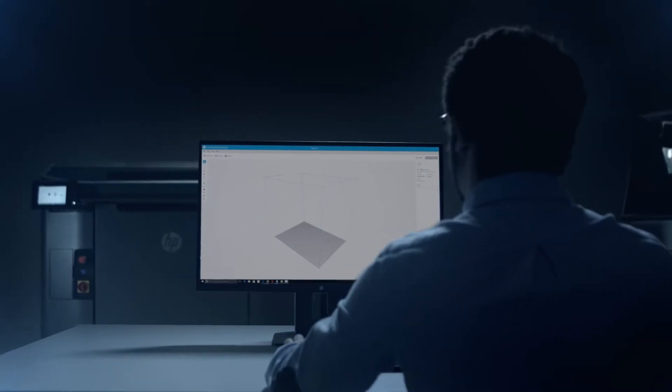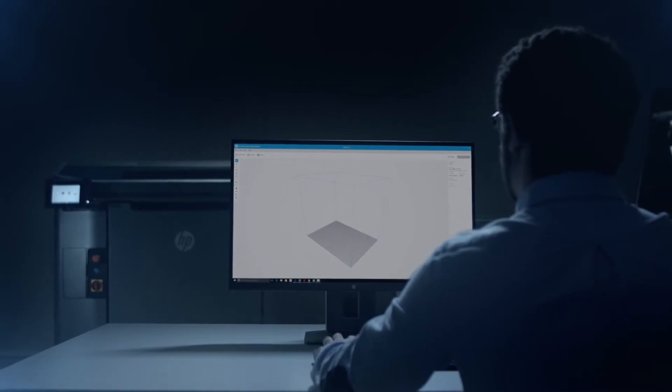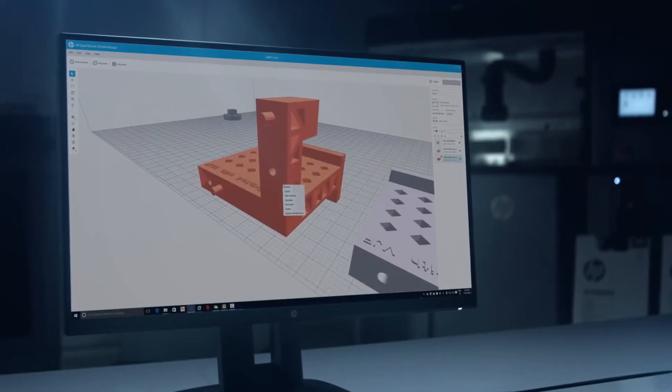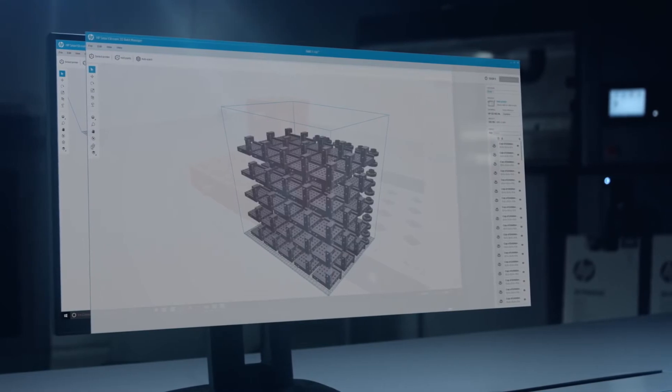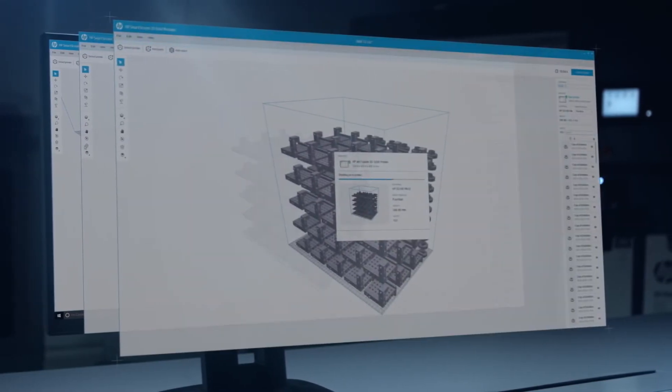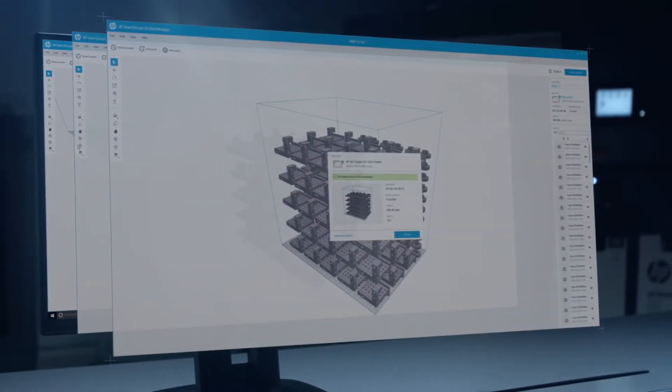The process begins with HP's easy-to-use software, which allows you to prepare the build to be printed, including error checking and automatic packing of your 3D models within the build chamber, before sending the job to print.